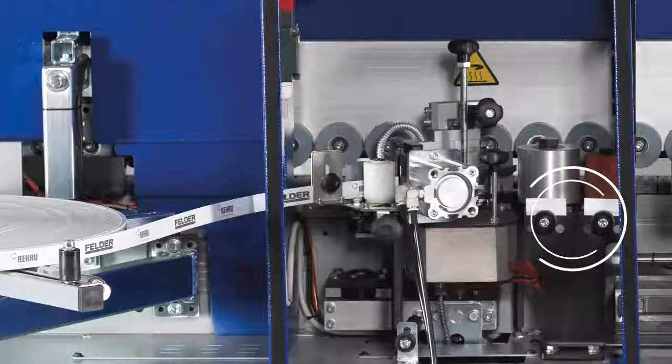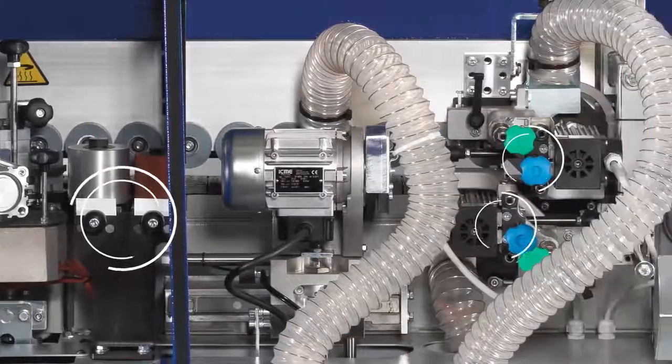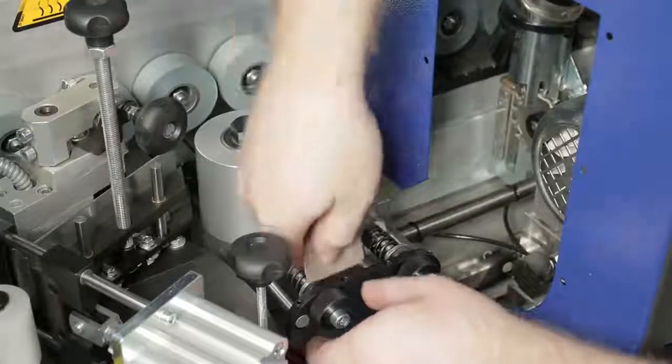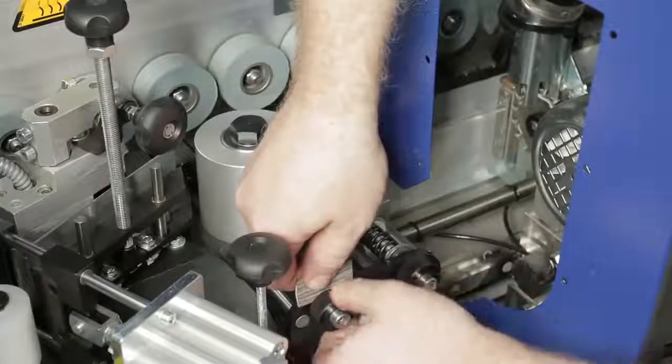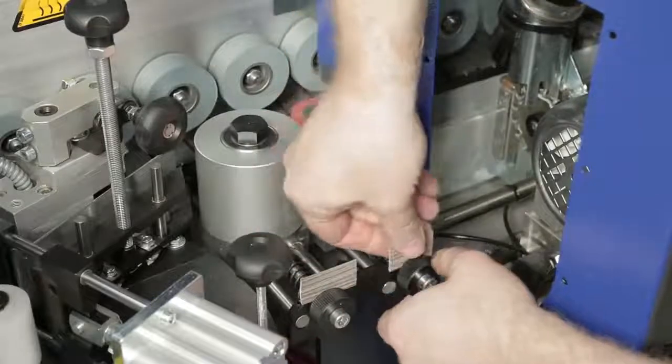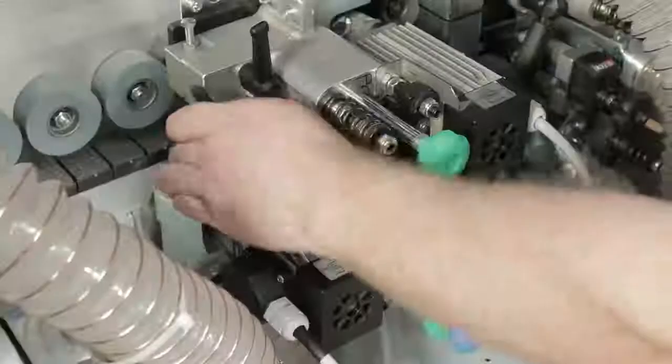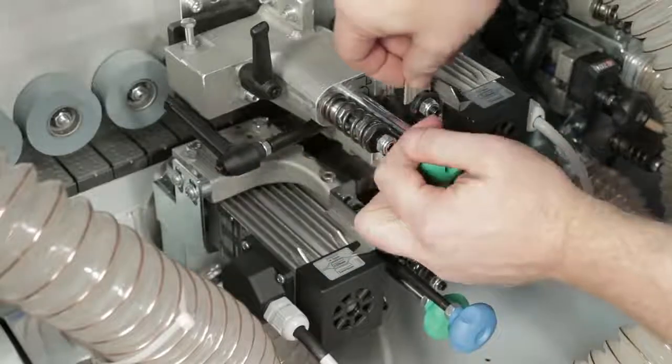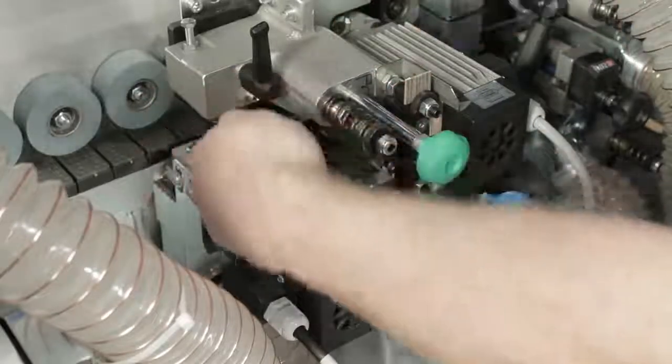The Felder quick set system, through the easy insertion of edge pieces, allows the pressure unit and the multifunctional trimming unit to be rapidly adjusted to an accuracy of 1/10th millimeter, 4 thousandths of an inch. Time-consuming fine adjustments on mechanical turning dials are a thing of the past.